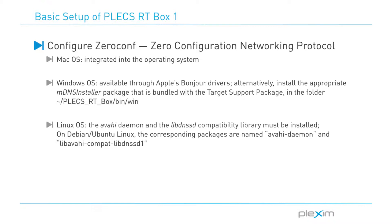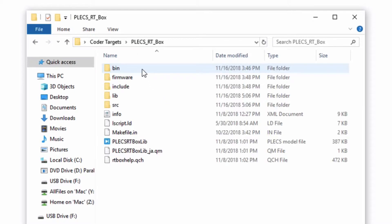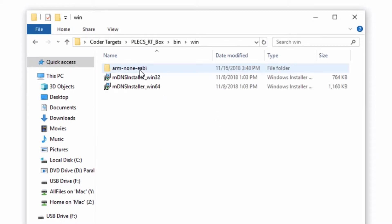On Mac OS, Zero Conf is integrated into the operating system. On Windows, Zero Conf is available through Apple's Bonjour drivers, which may already be installed on your computer. Alternatively, go to the Plex RT box directory that you've downloaded into the bin and then win folders and install the appropriate MDNS installer package.